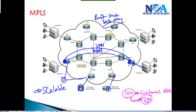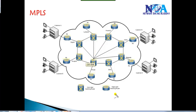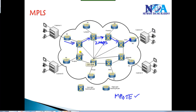The service provider builds the core once and uses all possible routes. There is a concept called MPLS Traffic Engineering, which is a very advanced topic. If the customer requirement is, say, 2 Mbps of traffic, and a particular link doesn't have 2 Mbps of bandwidth, it can redirect via an alternate possible route to reach the destination - using whichever route has that required 2 Mbps of bandwidth.